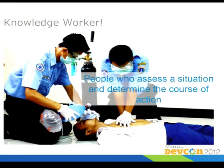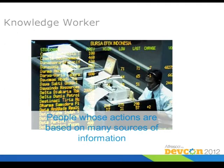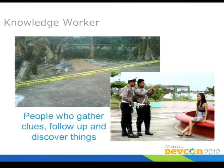Of course paramedics also have some guidelines about what they should do first and second. But depending on the severity of the accident or the condition of the patient, they might skip certain things just to make sure that the person survives. Stock exchange is another area for knowledge workers — they base their decisions on a huge source of information, they get some news and then they sell or buy. Police investigators are also knowledge workers — they gather clues, follow up, and discover things.